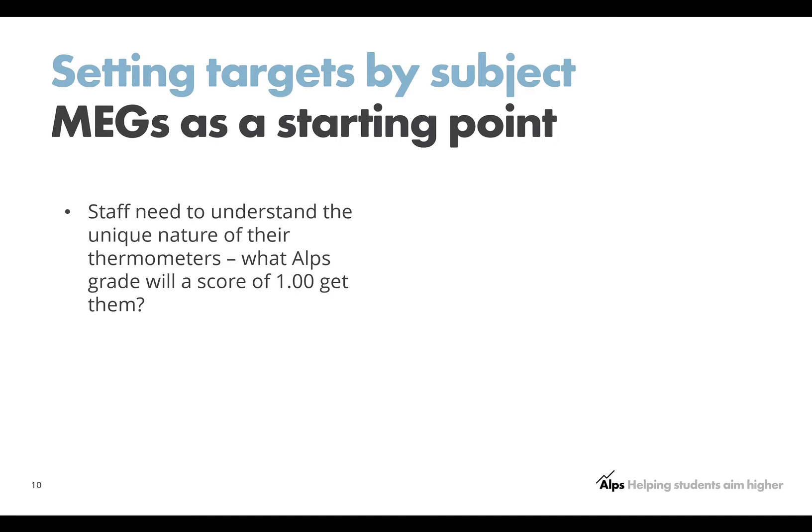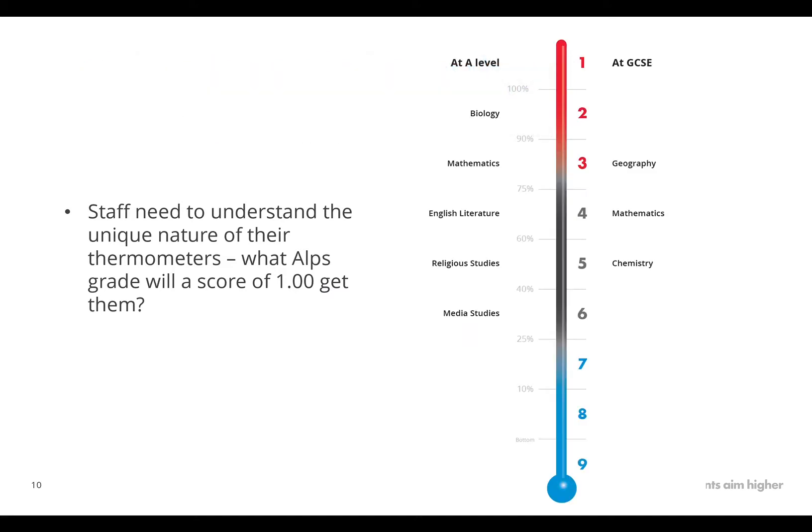All of your thermometers are unique. And if we start with an ALP score of 1.00, that means that every student in your class has gained their minimum expected grade. The calculation brings that out to 1.00. So what you then have to understand is how that maps onto your unique subject thermometer. A biology score of 1.00 will populate you in the top 10% of biology departments nationally.